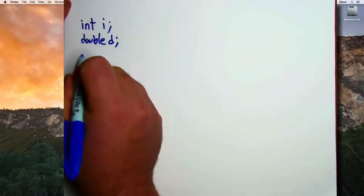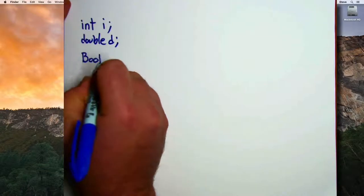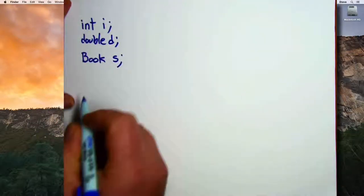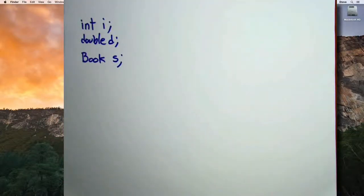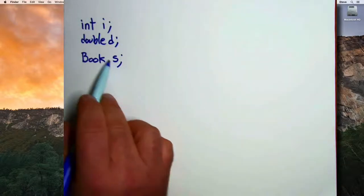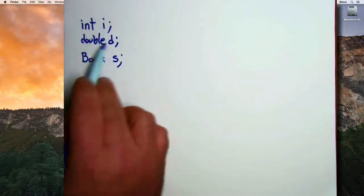For example, we're going to develop a class called book in the next couple of videos. And once we've done that, once we've explained to the system what is a book, then we'll be able to create books the same way that we can create integers or doubles.